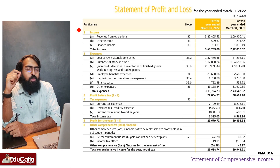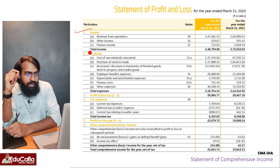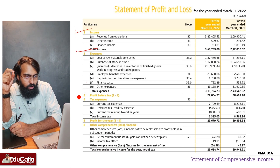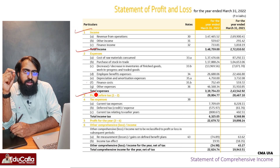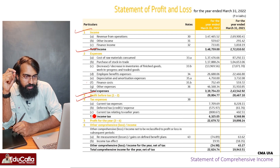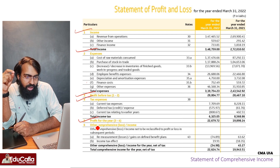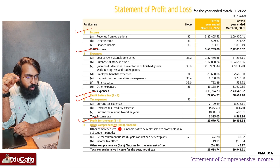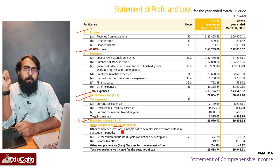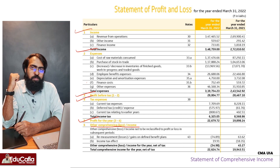The income statement covers: income, expense, profit before tax, tax expense, and profit for the year. That covers the main section. Then there is Other Comprehensive Income — that is what is presented additionally.